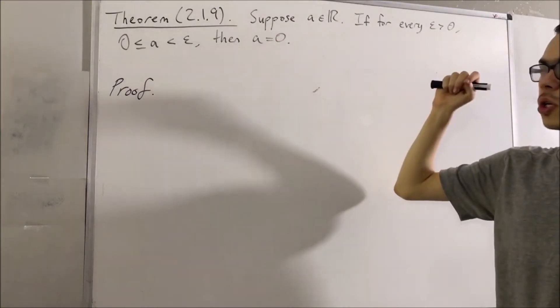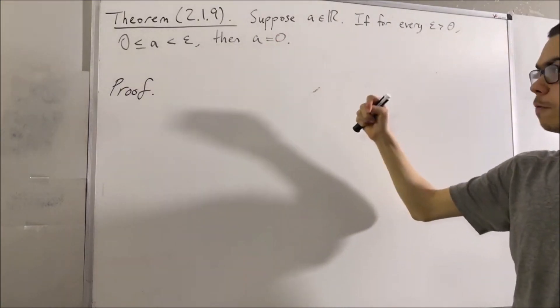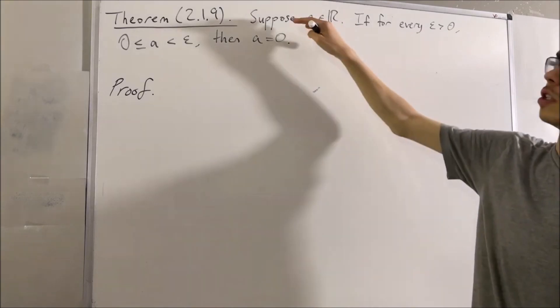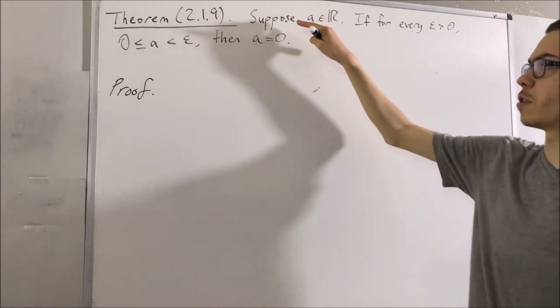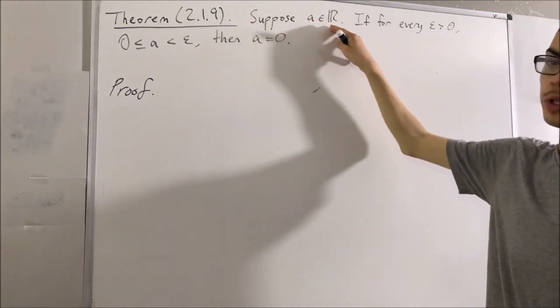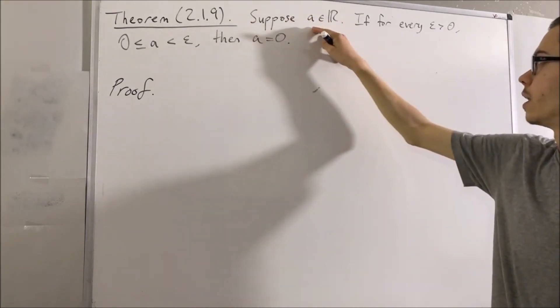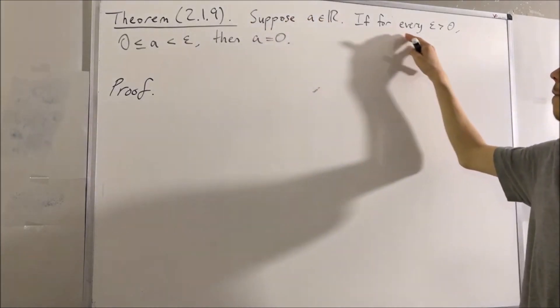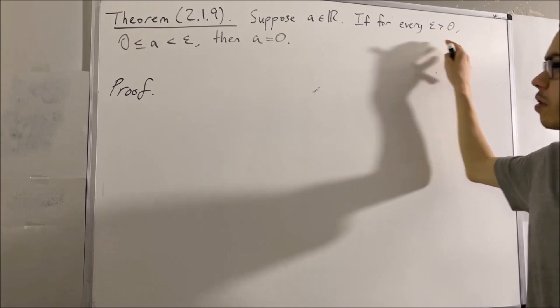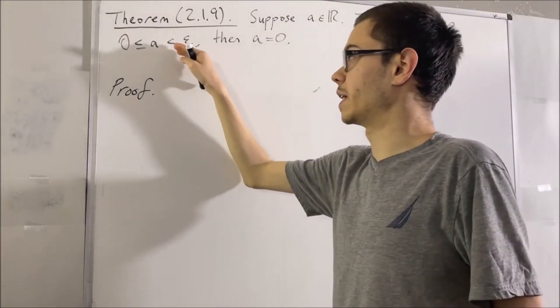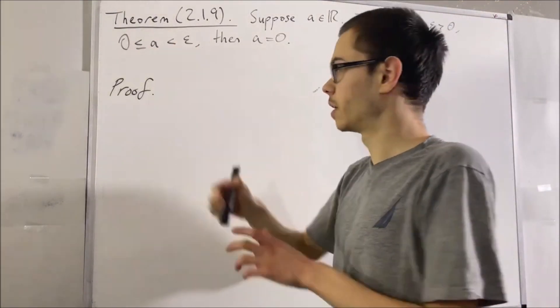Okay, so let's start out the proof. Let's give ourselves an arbitrary real number A, and let's assume that for every epsilon greater than 0, 0 is less than or equal to A is less than epsilon.